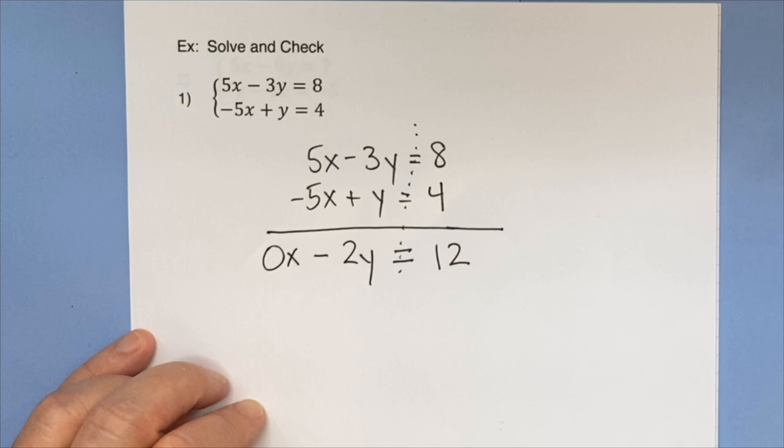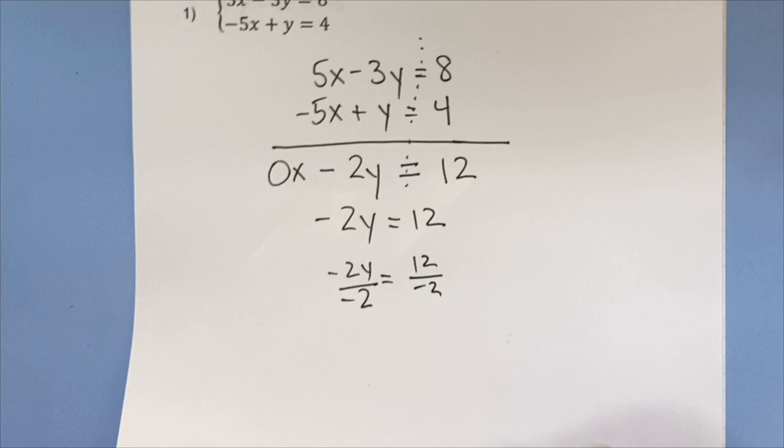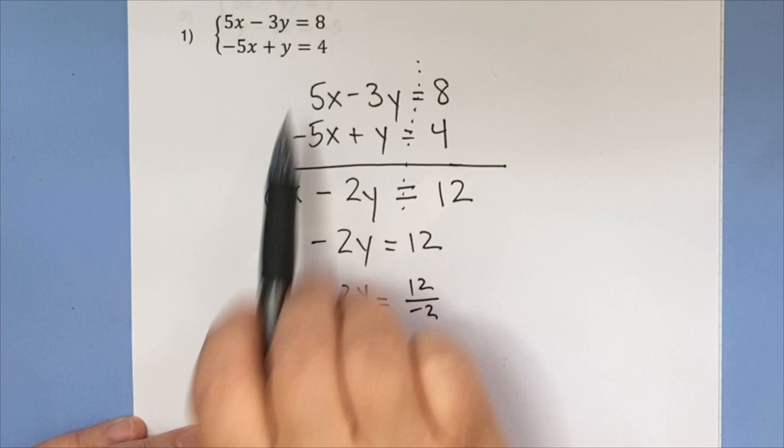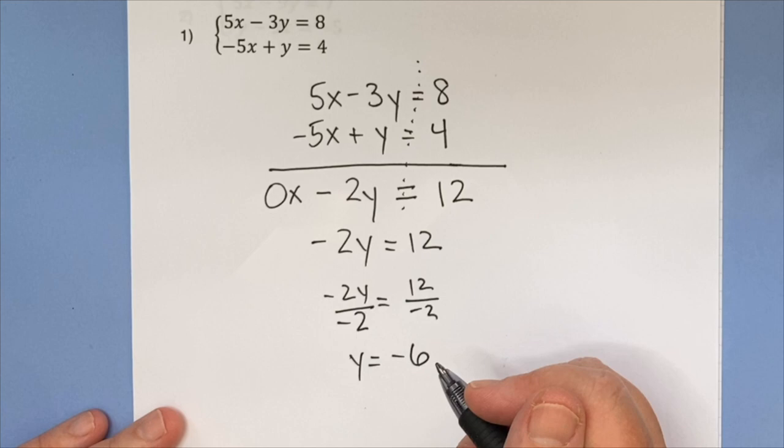And minus 3y plus y is a negative 2y. So what I get is negative 2y equals 12 or y equals negative 6. Yes, this problem was set up to go really fast, but this is a much more immediate way to get to a solution than substitution in many cases, especially if you do not start off with an equation where you've got x equals or y equals.